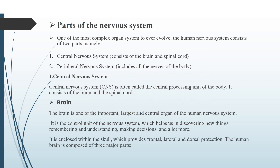Parts of the nervous system: One of the most complex organ systems to ever evolve, the human nervous system consists of two parts — namely, central nervous system, which consists of the brain and spinal cord, and peripheral nervous system, which includes all the nerves of the body. The central nervous system is often called the central processing unit of the body. It consists of the brain and the spinal cord.